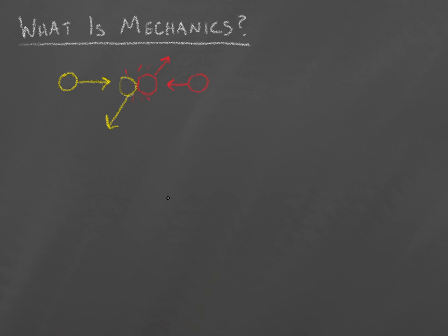And so that's what mechanics is really trying to do. How do interactions, sometimes not even physical interactions between objects, affect their motion?